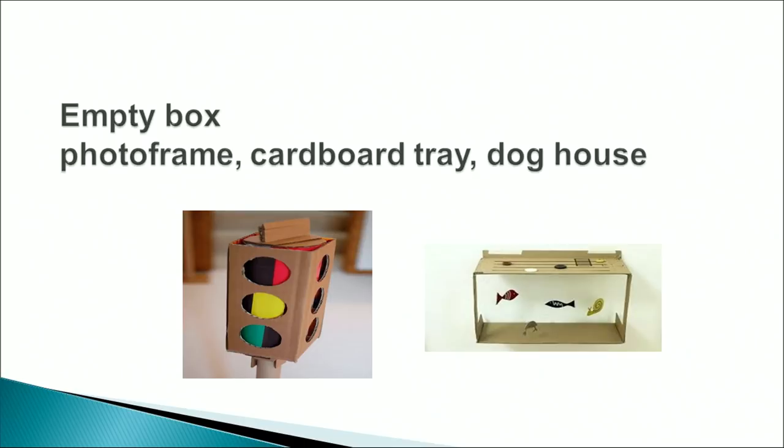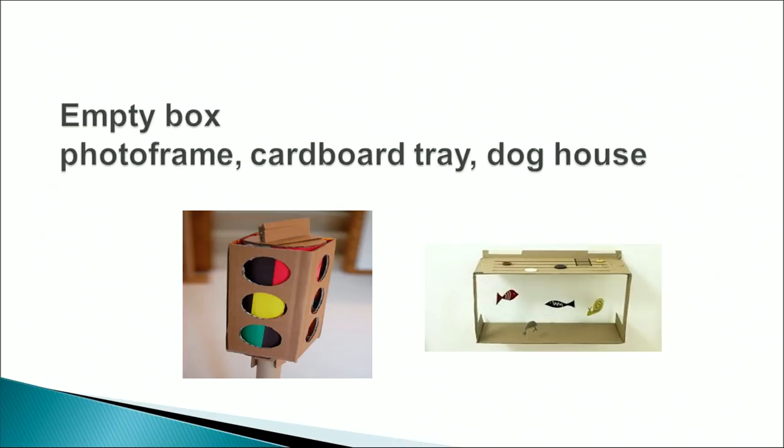More waste materials include: old stamps, old envelopes, old greeting cards, thread, buttons, chains, cycle tubes, ice cream spoons, egg peel, and old brooms. With empty boxes under work education, we can prepare a photo frame, cardboard tray, dog house, traffic light — which is given as a project to children in primary classes — and an aquarium, where we cover the box with clean paper and hang fish inside it.